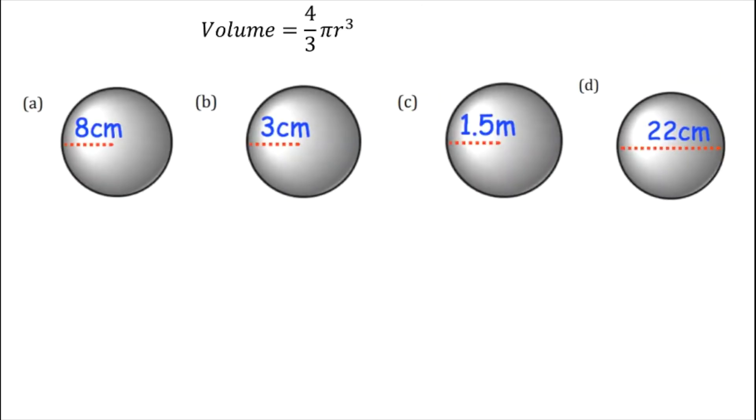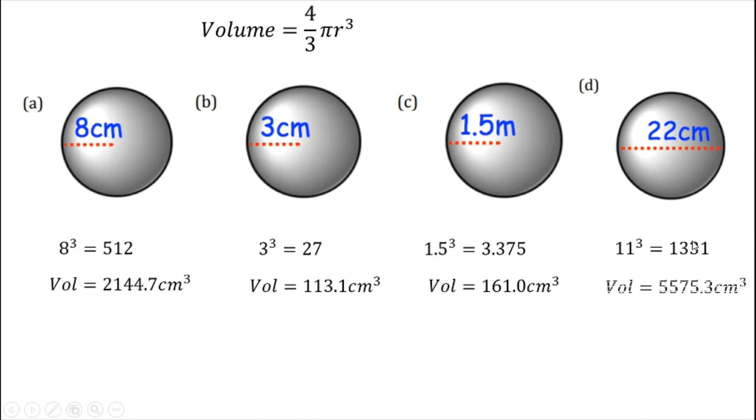Here's your formula and four questions. For each one, work out what the value of r cubed is first, and then work out the volume of the sphere. Pause it and then you can unpause it for the answers. Your answers for these: 8 cubed is 512, the volume should have been 2,144.7. I've rounded to one decimal place on all my answers. The next one, 27 and 113.1. The next one, 3.375 and 161.0. And the final one is 11 cubed. This is a diameter and you needed to use a radius, so you should have used a radius of 11. So you get 1,331 for 11 cubed, which gives a volume of 5,575.3.